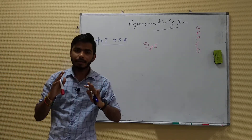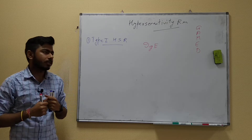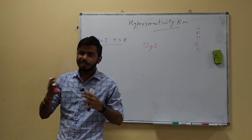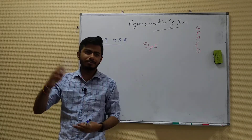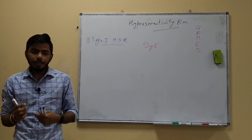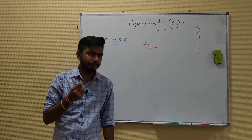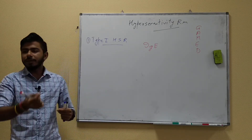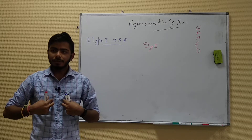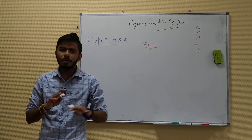Imagine a scenario for understanding the pathophysiology of type 1 hypersensitivity. A person is allergic to pollen grains and has seasonal allergy. During spring, he goes into a garden without knowing he has this allergy. He inhales pollen grains with the air, and they enter his lungs. He goes home and nothing happens — no signs of hypersensitivity are seen yet.